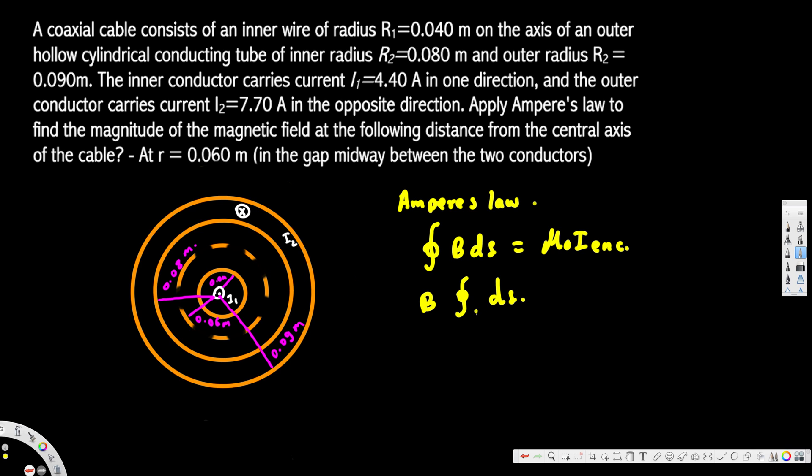The line of current is going to be a circle, and the length of the circle is the circumference. The circumference of the circle is given by 2πr. In our case, we're interested in this point r, so this is going to be 2πr.